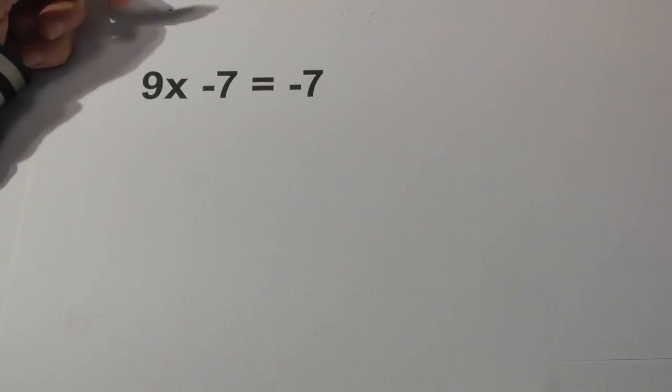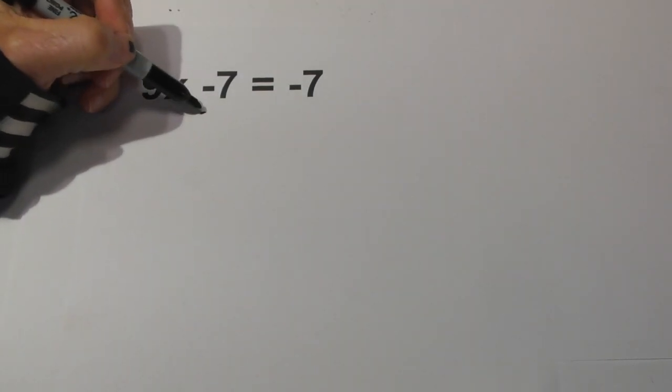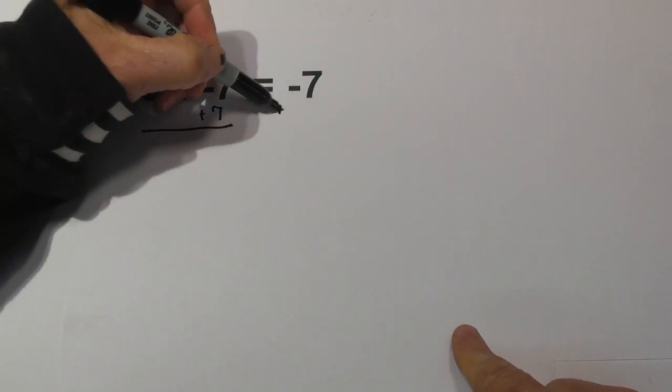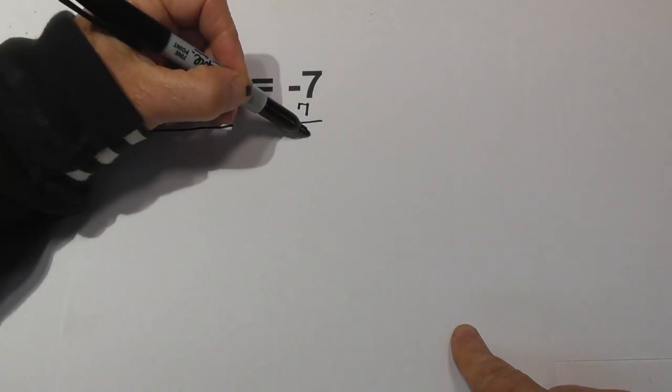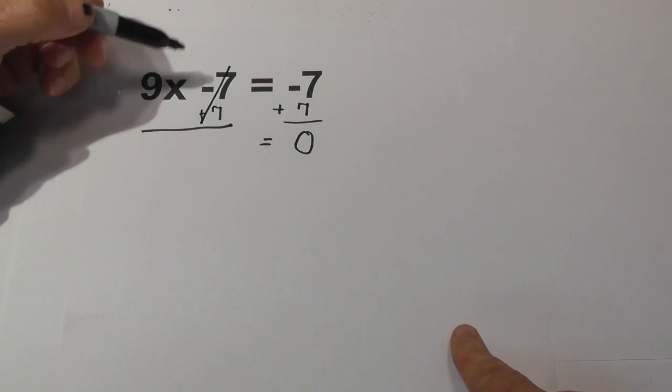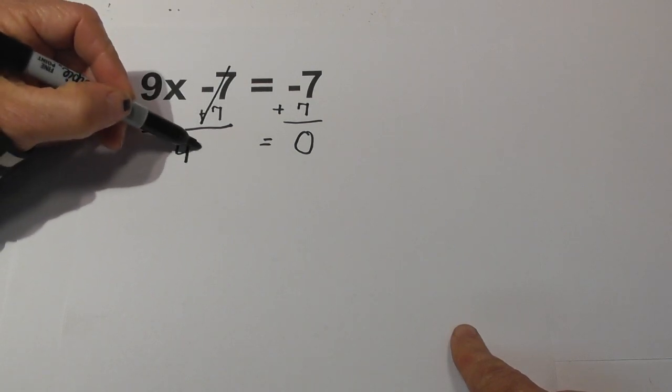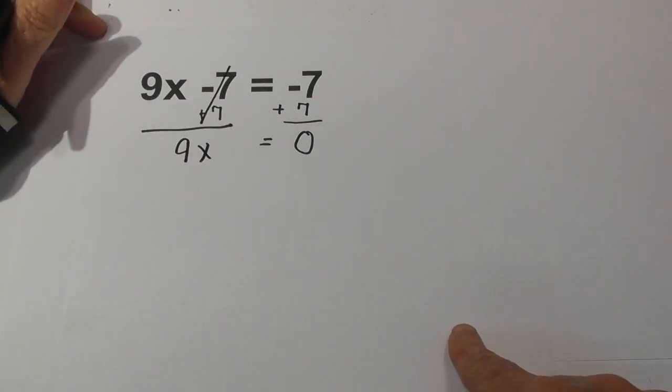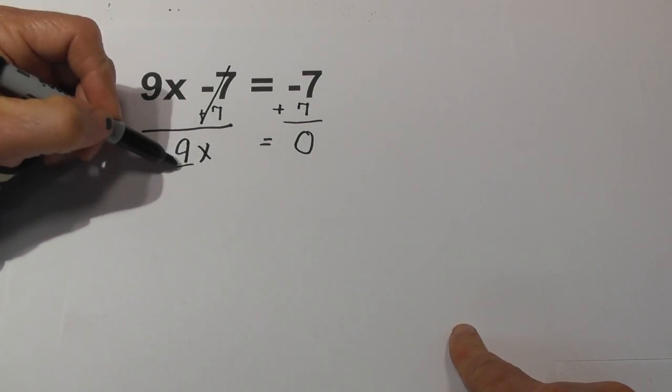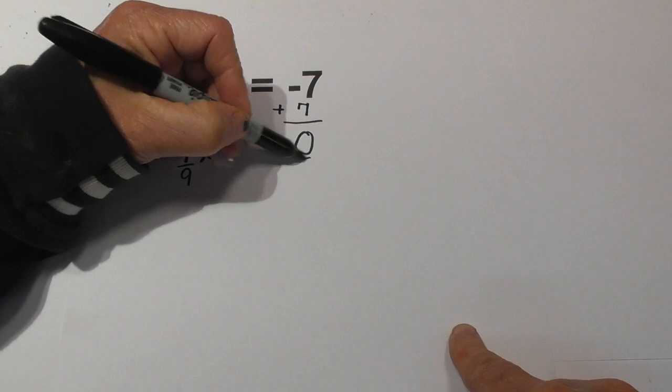Remember, we want to isolate the x. So we're going to begin by adding 7 to both sides. When you add 7 and 7, that equals 0. And obviously these cancel. So now we have 9x equals 0. It's kind of odd. So we have multiplication. So let's divide both sides by 9.